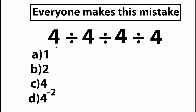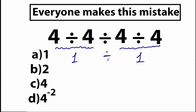A lot of students solve this question like that. They say: right here we have 4 divided by 4 equal to 1, and we have the same division on the right side — 4 divided by 4 equal to 1 as well. So with this division in the middle, we have 1 divided by 1 equal to 1.